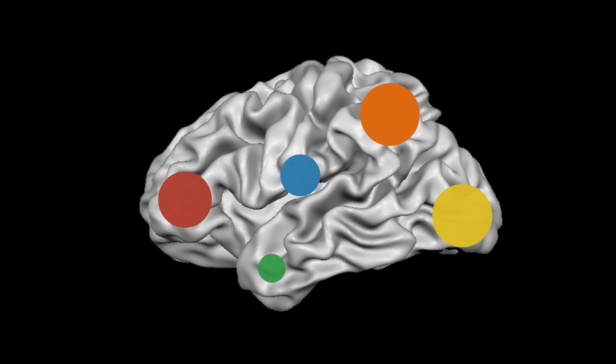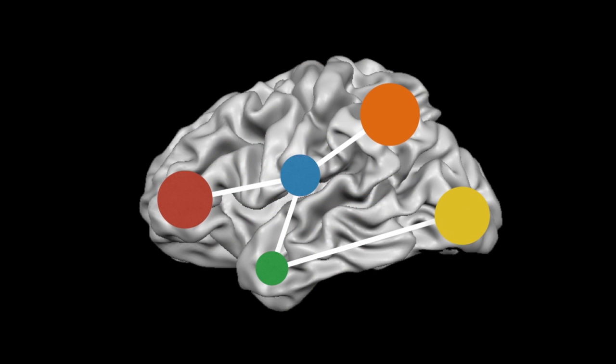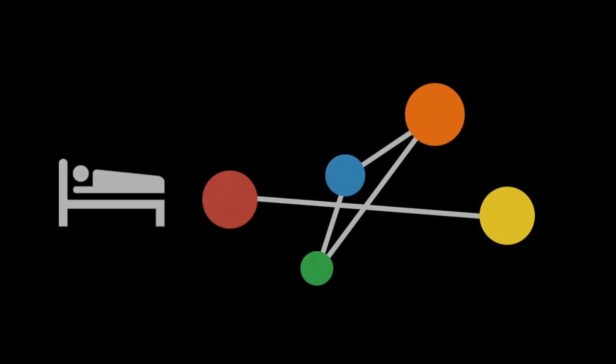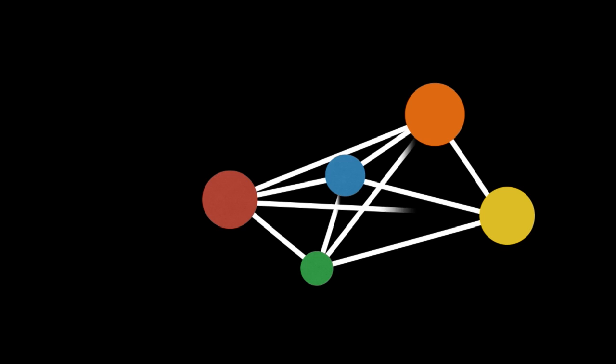The Human Connectome Project is an example where scientists are currently looking into how brain areas are connected to each other and how they work together depending on the task. The goal is to create a map of all connections inside the brain.